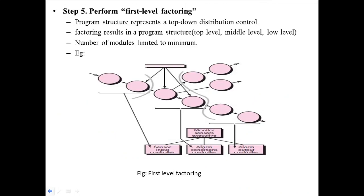See this example. Step 5 is very important. This step is used to convert your data flow diagram to architectural design. In this, each and every flow is converted to architectural design. The program structure represents your top-down distributed control. Factoring results in the program structure - that is, we are making a top-level, middle-level, and low-level from the diagram. Number of modules are limited to that example.